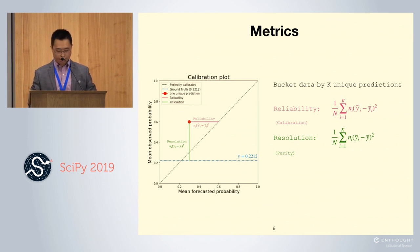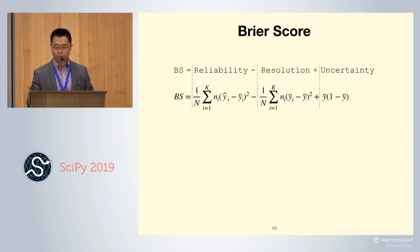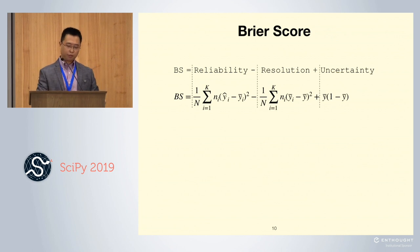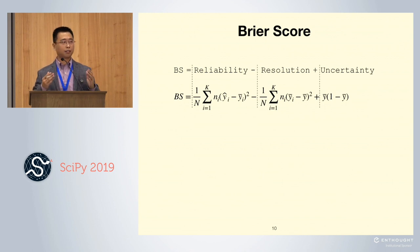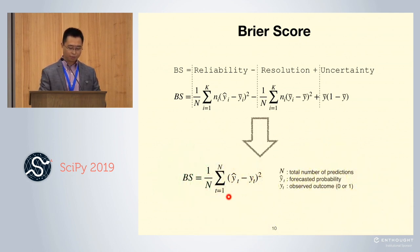Lastly, we add a term called Uncertainty. It measures the noise level of your data. Now we have all our metrics. Let's put them together. We get our Brier score. Brier score equals reliability minus resolution plus uncertainty. This equation may look complex, but fortunately we can mathematically simplify them into a final term. The Brier score is the mean squared loss.